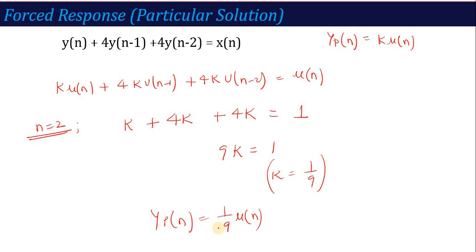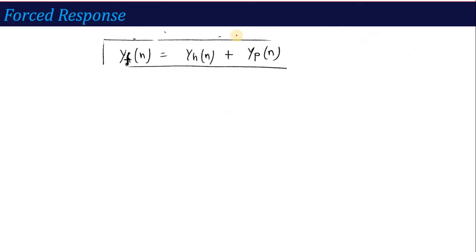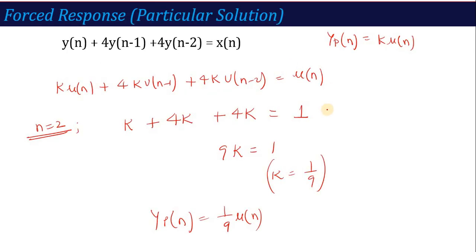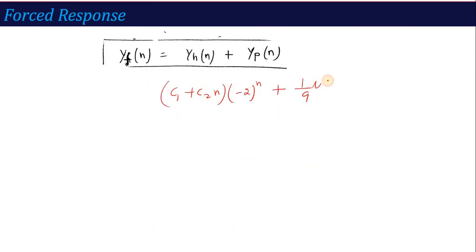The complete forced response is the homogeneous solution plus the particular solution: y[n] = (C₁ + C₂·n)·(−2)ⁿ + (1/9)·u[n].